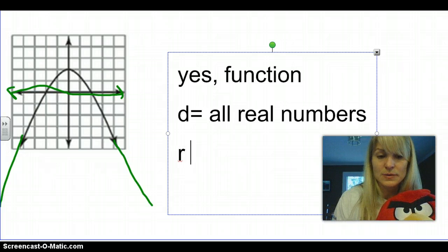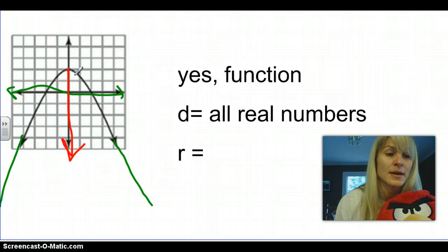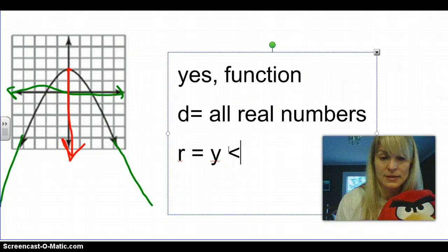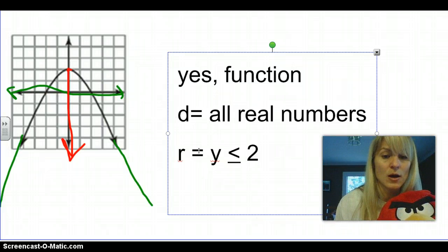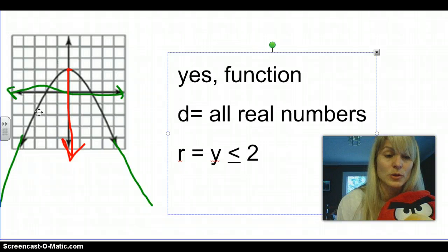When we look at the range, that's a little different because the range is the y value. Clearly there's no part of the graph above this point, so the range starts at this point and goes forever down. This point is (0, 2), so it starts at the 2 on the range. For this parabola, y is less than or equal to 2, because it includes that 2. All y values will start at 2 and then go down — here y is 0, here y is negative 2, and all the y values will be at or below 2.